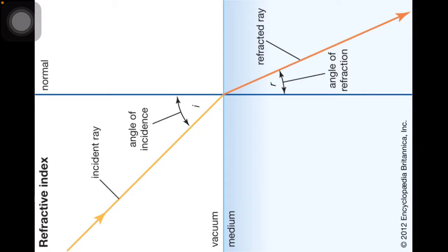When light is traveling from one medium to another medium, those two mediums are separated by a boundary. The direction of propagation of light will change — that phenomenon is associated with refractive index.